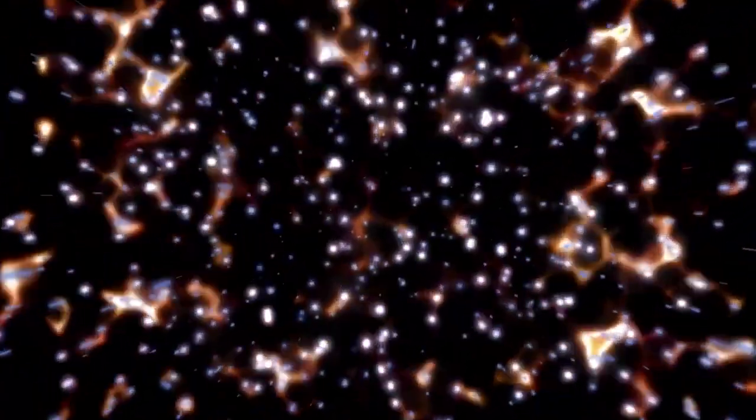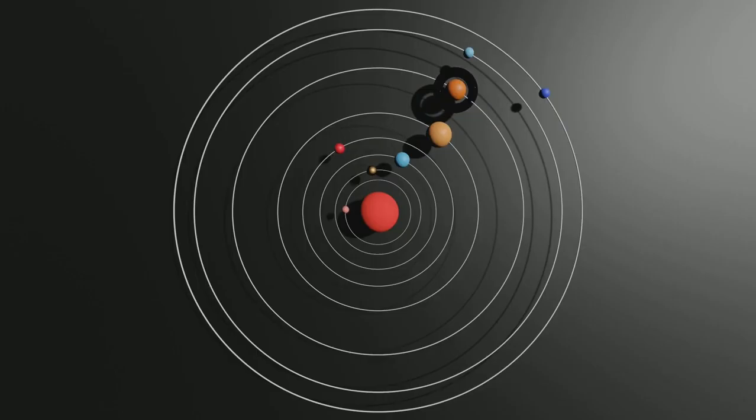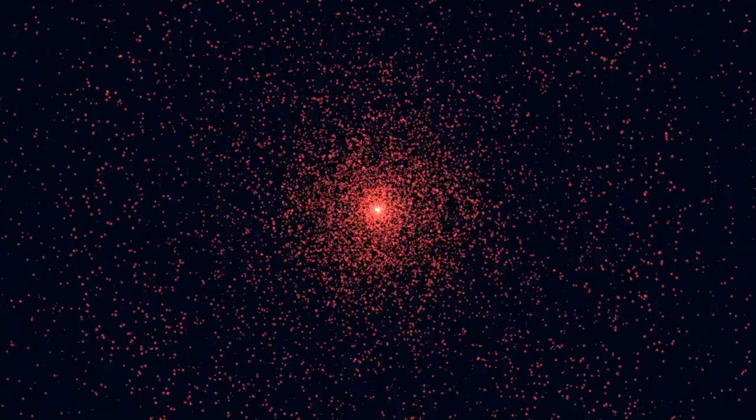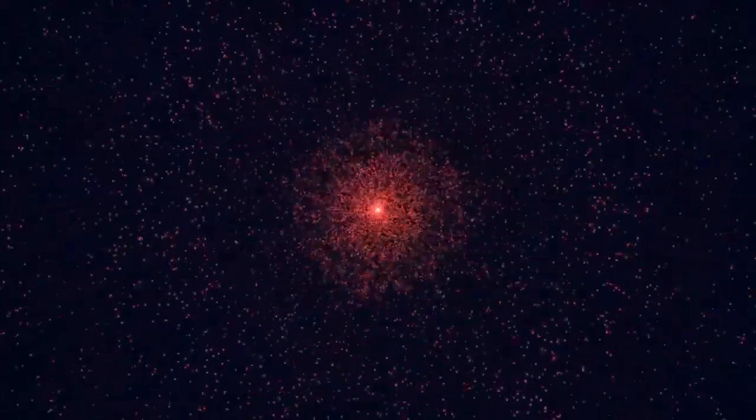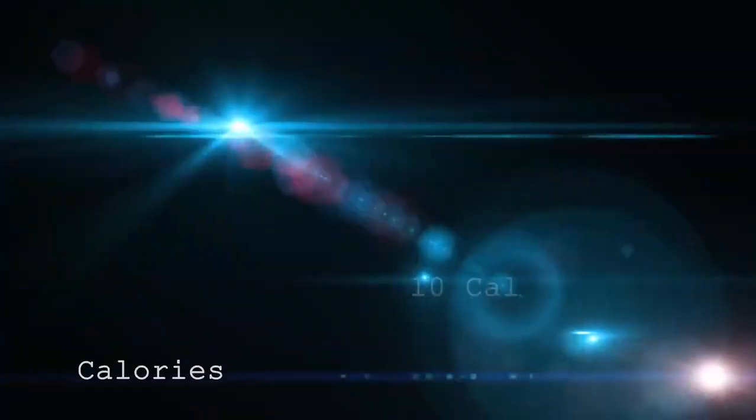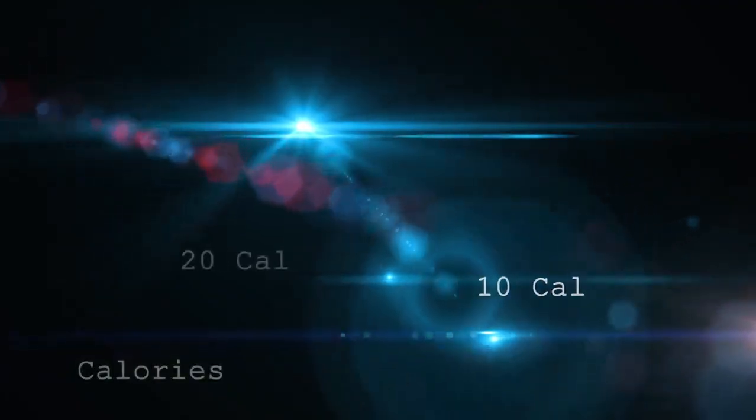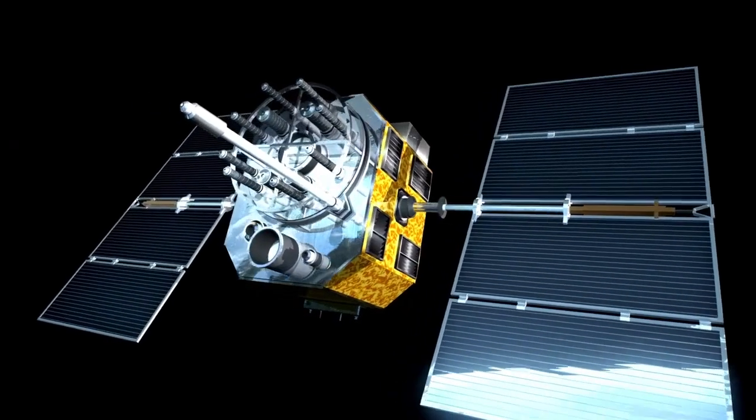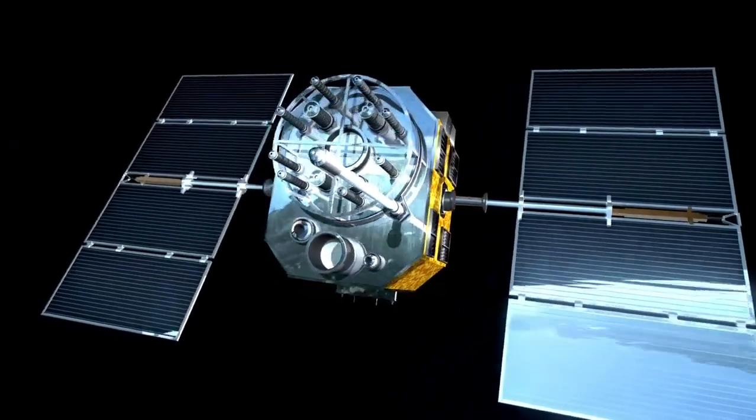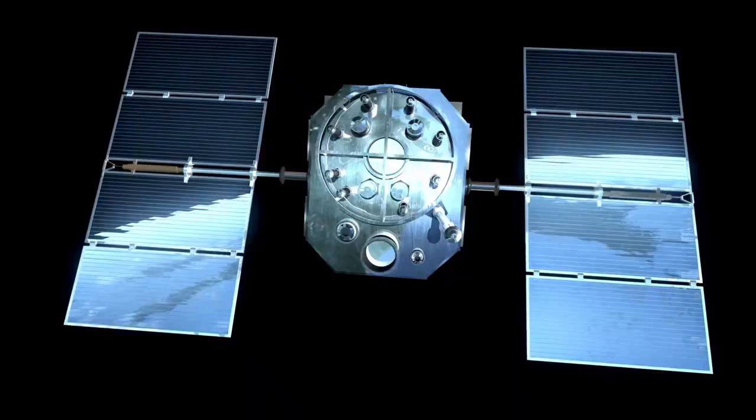The nearest star to us, Alpha Centauri, is located 4.3 light-years away. This means that even if we could travel at the speed of light, it would still take us over four years to reach it. Now consider the time required to venture even further beyond our stellar neighborhood. If we traveled at the same speed as Voyager 1, just 38,000 miles per hour, reaching Alpha Centauri would take an incomprehensible 70,000 years. This realization underscores the immense distances that exist between stars, demonstrating just how vast space truly is.